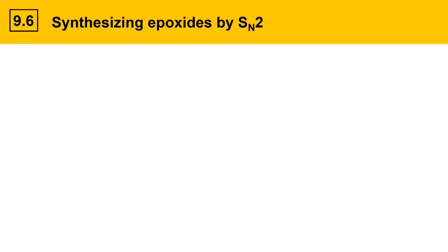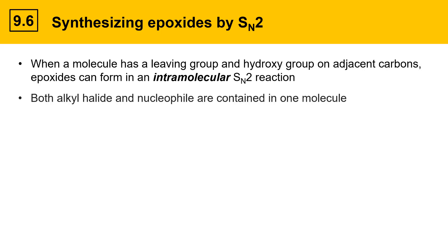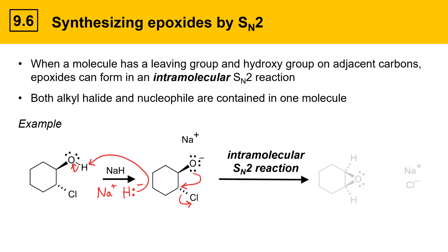The next topic covers synthesizing epoxides by an SN2 reaction. When a molecule has a leaving group and a hydroxy group on adjacent carbons, epoxides can form through an intramolecular SN2 reaction, where both the alkyl halide and nucleophile components are in one molecule. For example, consider an alkyl halide with a bond to chlorine and an OH group on the adjacent carbon. Treating with sodium hydride deprotonates the alcohol to generate an alkoxide — a strong nucleophile — in the same molecule as the leaving group. The nucleophile attacks and displaces the chloride leaving group. It's called an intramolecular SN2 reaction because the molecule attacks itself — like a snake biting its tail — and the result is a ring, forming an epoxide.